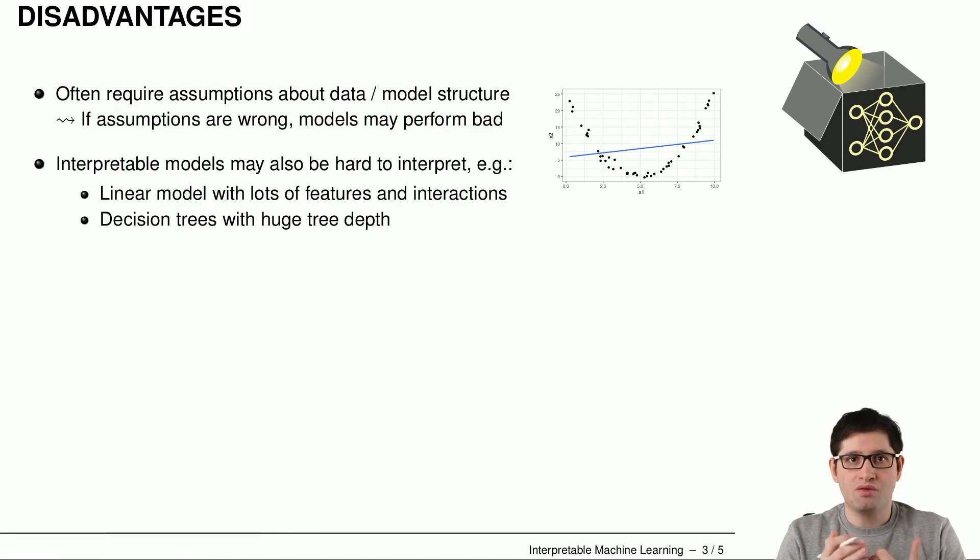So inherently interpretable models can also be hard to interpret. Usually what gets complicated is if you have lots of features and lots of interactions that you include in, for example, a linear regression model. They make it more difficult to get an understanding how the target that we are interested in is affected by all of these features and interactions. This is just a lot of information that you are getting because for each of these features and interactions, the model estimates a weight. And if you have many of these weights, you have to interpret all of them. The quantity here makes things more complicated.